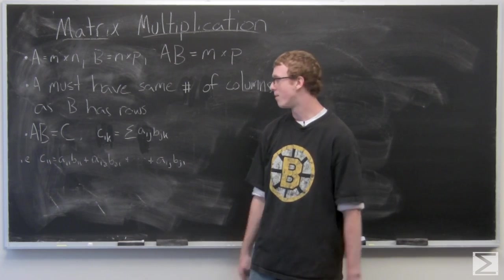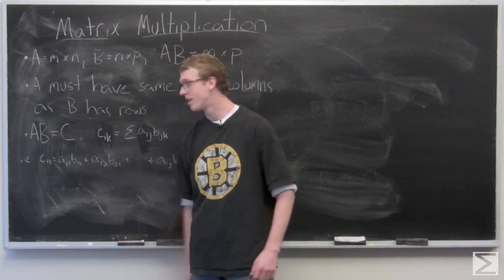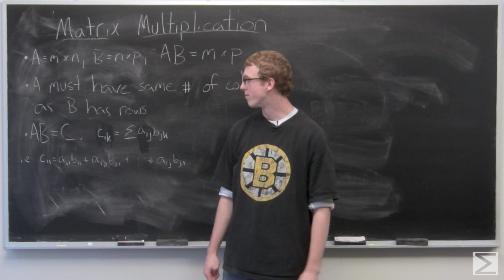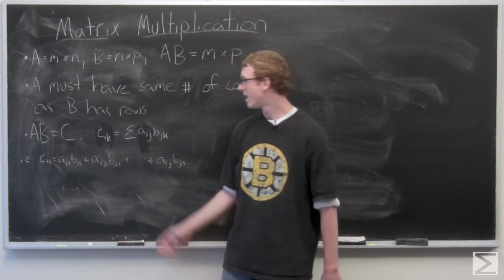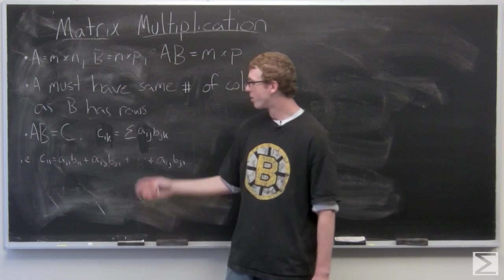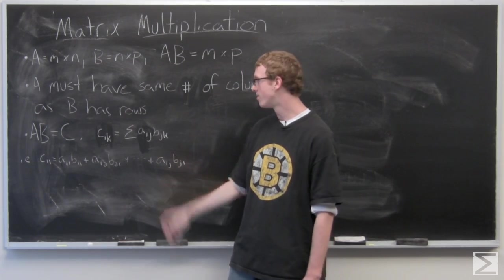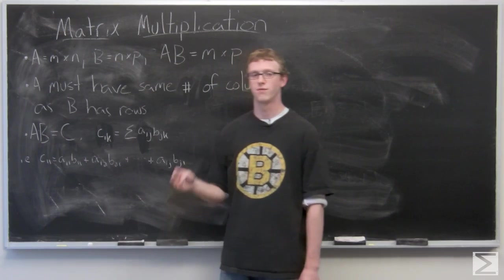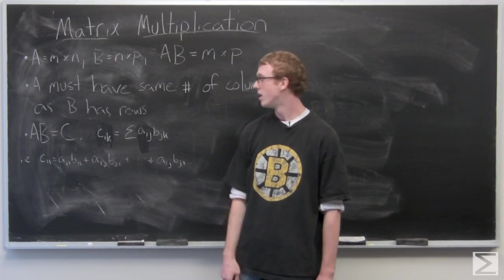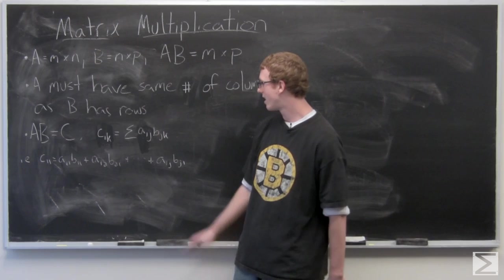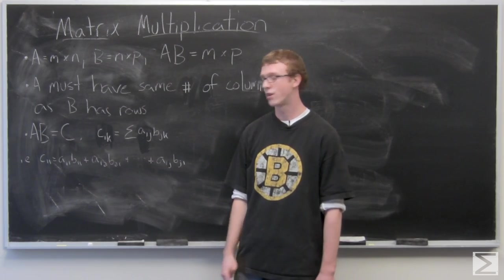So basically what that means, the first entry of matrix C is going to be A11 times B11 plus A12, that's the first row, second column, times B21, that's the second row, first column. And it's going to continue like that until you get to the end of the first row of A.